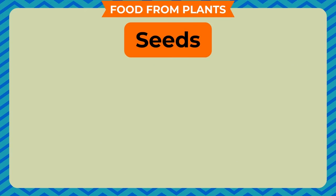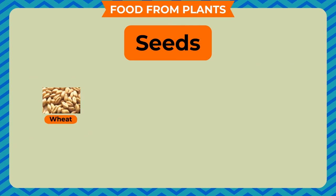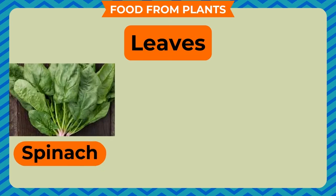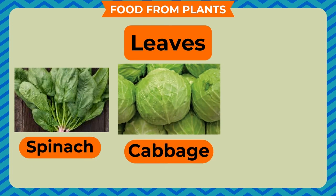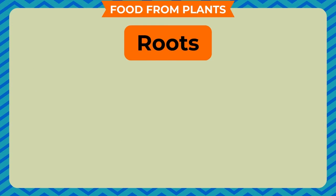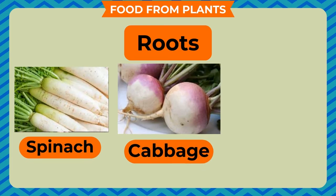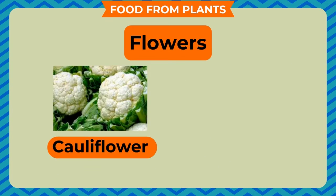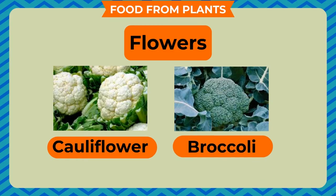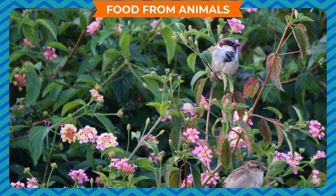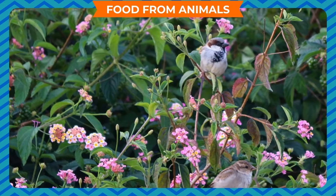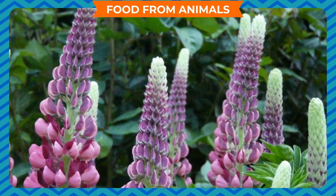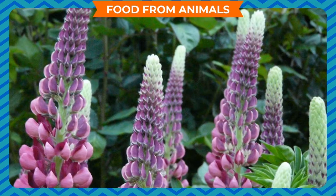Food is obtained from different parts of the plant: fruits like banana, mango, and apple; stems like potato, ginger, and sugarcane; seeds like wheat, pea, and rice; leaves like spinach, cabbage, and coriander; roots like radish, turnip, and carrot; and flowers like cauliflower and broccoli.